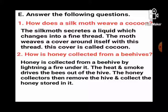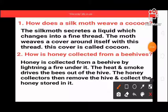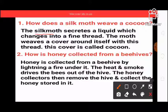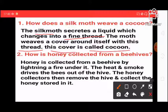How does a silk moth weave a cocoon? The silk moth secretes a liquid which changes into a fine thread when it comes in contact with the atmosphere. The moth weaves a cover around itself with this thread, and this cover is called a cocoon.